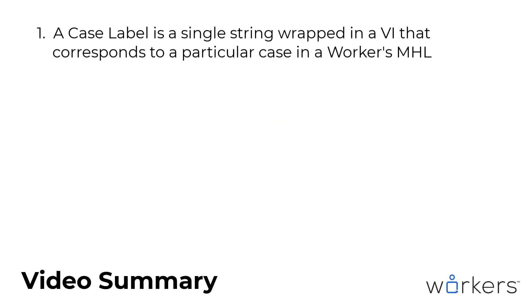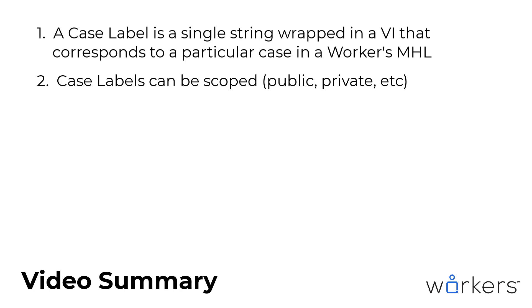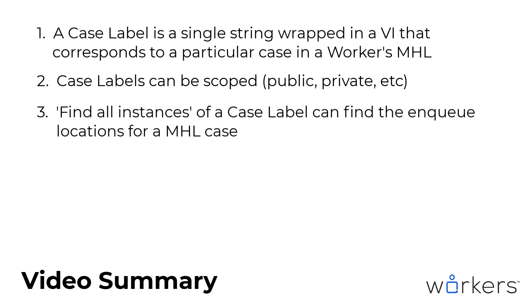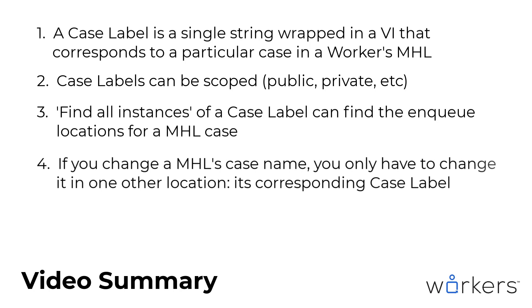So to summarize the contents of this video: a case label is simply a single string wrapped in a VI that corresponds to a particular case in a worker's message handling loop, and these are used in place of string constants when you want to define which case of a message handling loop to send a message to. Unlike string constants, case labels can be scoped, helping you control which cases of a message handling loop can be called by external workers and which cannot. It is easy to search for all instances of a case label used throughout your code by right clicking on a case label's icon and selecting Find All Instances. If you ever want to change a message handling loop's case name, you only have to change it in one other location — the string output indicator of the corresponding case label — and not in many places throughout your code as you would have to if you used string constants.